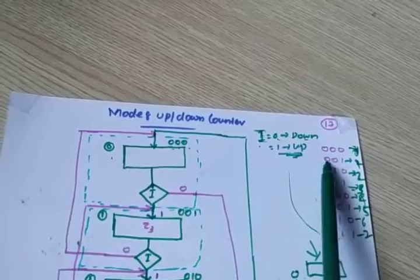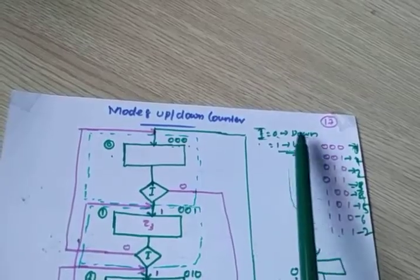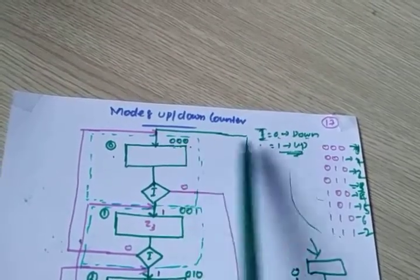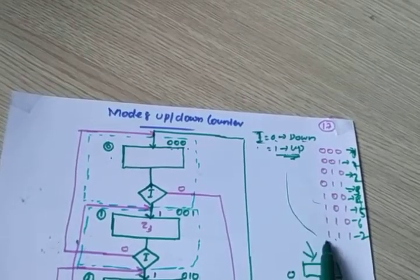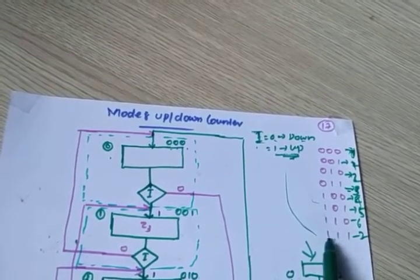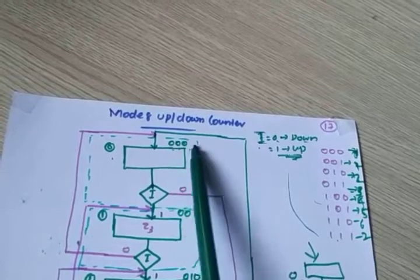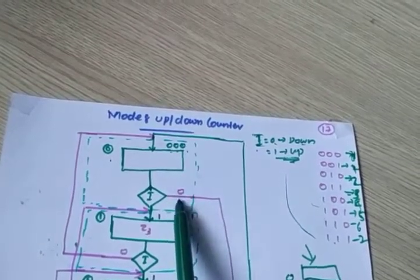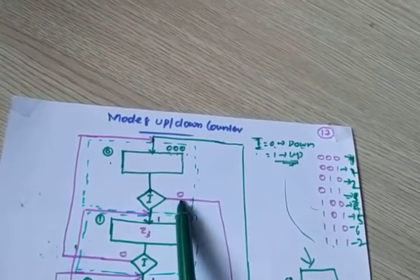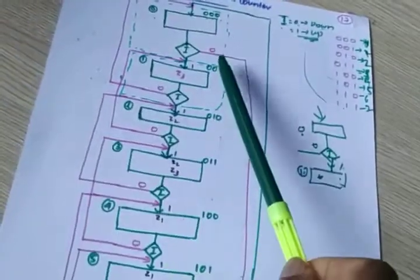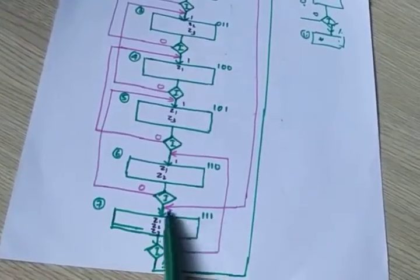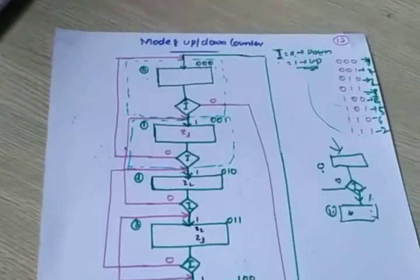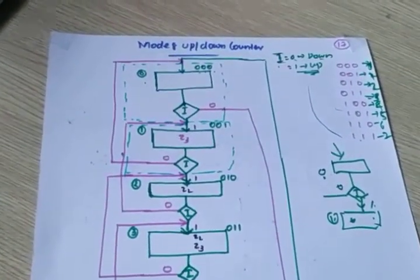If you are going to 001, it is up count. You are in 000 and i is 0 — that means down count. You have to start from 111. So if decision is 0, you go to 111. That's why I have drawn a line going to 111. So this is the mod-8 up-down counter.